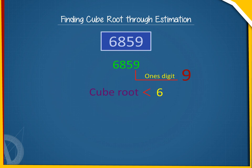The largest single digit whose cube is less than 6 is 1 because 1 cubed equals 1, which is less than 6.